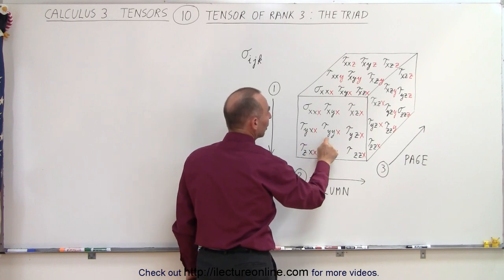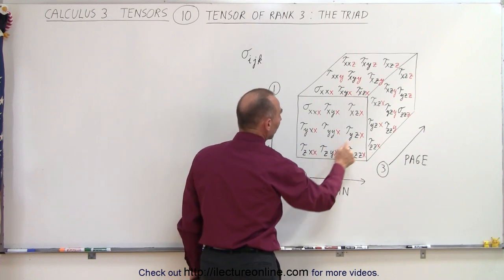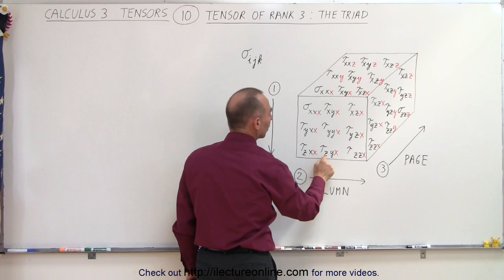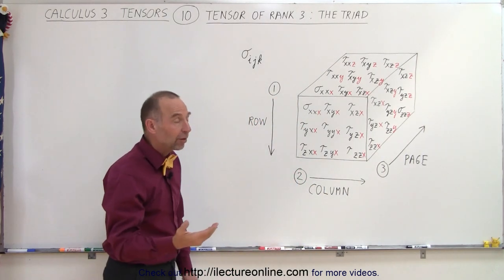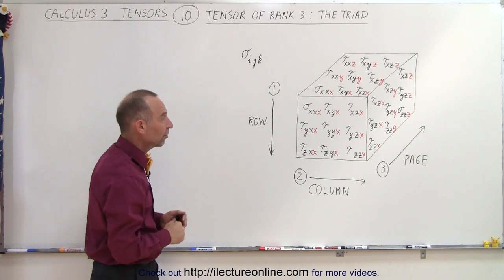We have 2, 1, 1, 2, 2, 1, 2, 3, 1. And here we'd have 3, 1, 1, 3, 2, 1, 3, 3, 1, if you want to represent it by 1s and 2s and 3s instead of X, Ys and Zs.